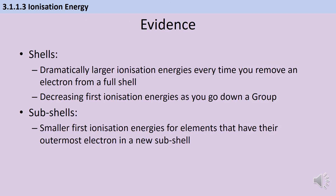Ionization energies provide evidence that shells and subshells actually exist. For shells: there are dramatically larger ionization energies each time an electron is removed from a full shell, because it's closer to the nucleus and experiences less shielding. The decrease in first ionization energy down a group also supports this. For subshells: elements like aluminium show a smaller first ionization energy when their outermost electron is in a new, higher-energy subshell further from the nucleus.